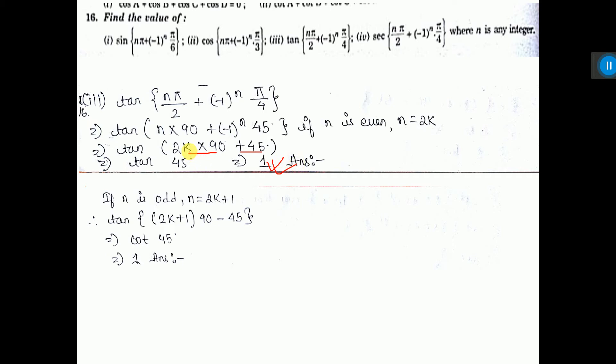Again, we have to put the value of k equal to 1. So 1 means 2 into 1, that is 2, 2 into 90 plus 45. Draw that quadrant, 2 into 90 plus 45.